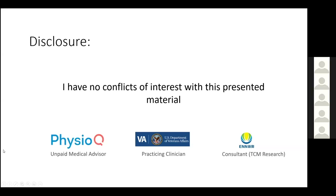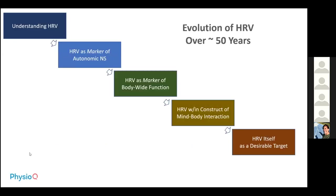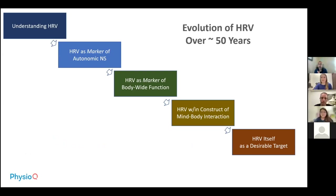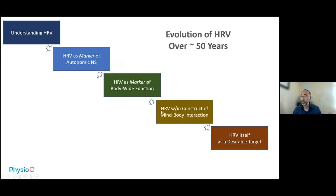This is my disclosure slide — no conflicts of interest with this present material. As mentioned in my first talk, this is how I interpret how heart rate variability has evolved through the past 50 years, and it's divided into five stages: understanding heart rate variability; HRV as a marker of autonomic nervous system; HRV as a marker of body-wide function; HRV within the construct of mind-body interaction; and HRV itself as a desirable target.